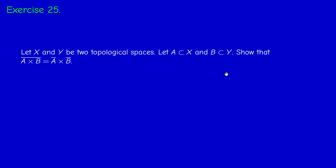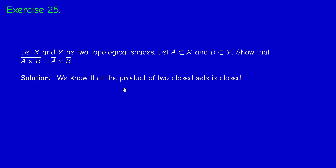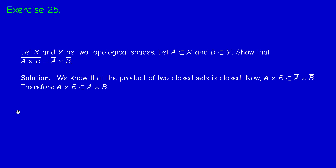Exercise 25 is about the product topology. We have two topological spaces X and Y, a subset A of X and a subset B of Y. We have to show that the closure of the product A×B equals the product of the closures: A bar × B bar. We prove this by double inclusion. We already proved in the lectures that the product of two closures is closed in the product topology, because the complement is open. So A bar × B bar is a closed set in the product containing A×B. Since the closure of A×B is the smallest closed set containing A×B, we get A bar × B bar ⊇ closure(A×B).